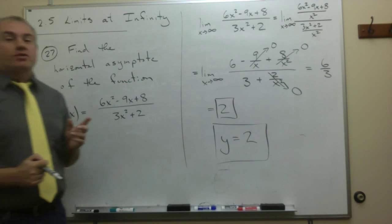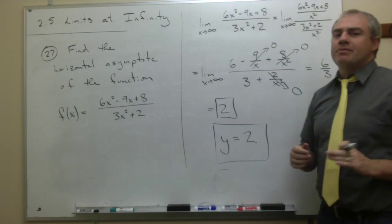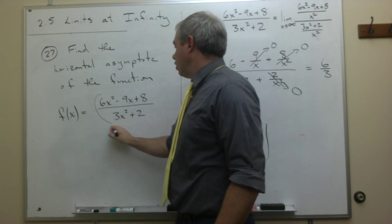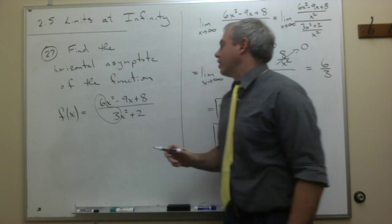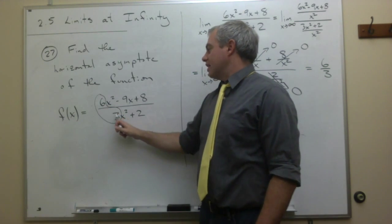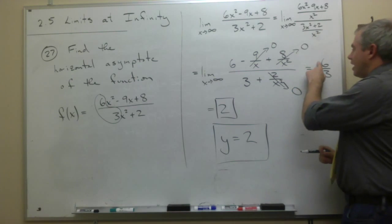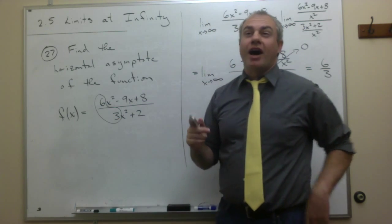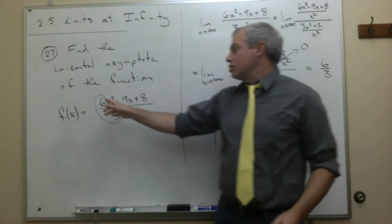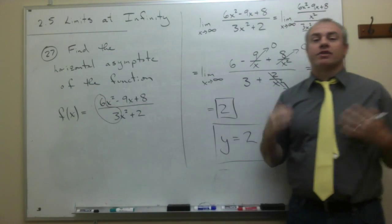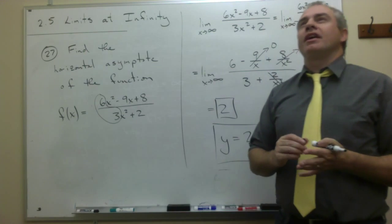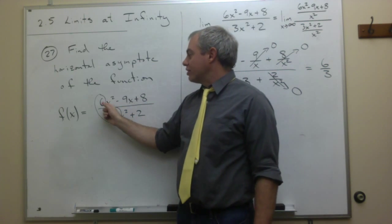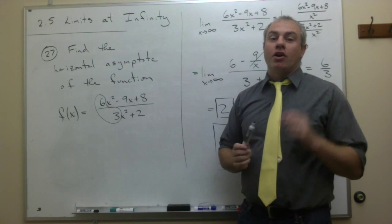One quick thing of note that's worth talking about for just a second is some of you might be saying, if I would have just started right off the bat by saying, let's look at these two values, the value sitting out in front of the x squareds, it's a 6 and a 3. What did I end up with at the end here? A 6 and a 3. So in other words, I was able to take the two numbers that are out in front of the highest powers of x, and just use them as the answer. And you might be asking yourself, does this always work? And the answer is, it does always work if you're dealing with a rational function, and the highest power of x on the top and the bottom of the fraction are exactly the same.